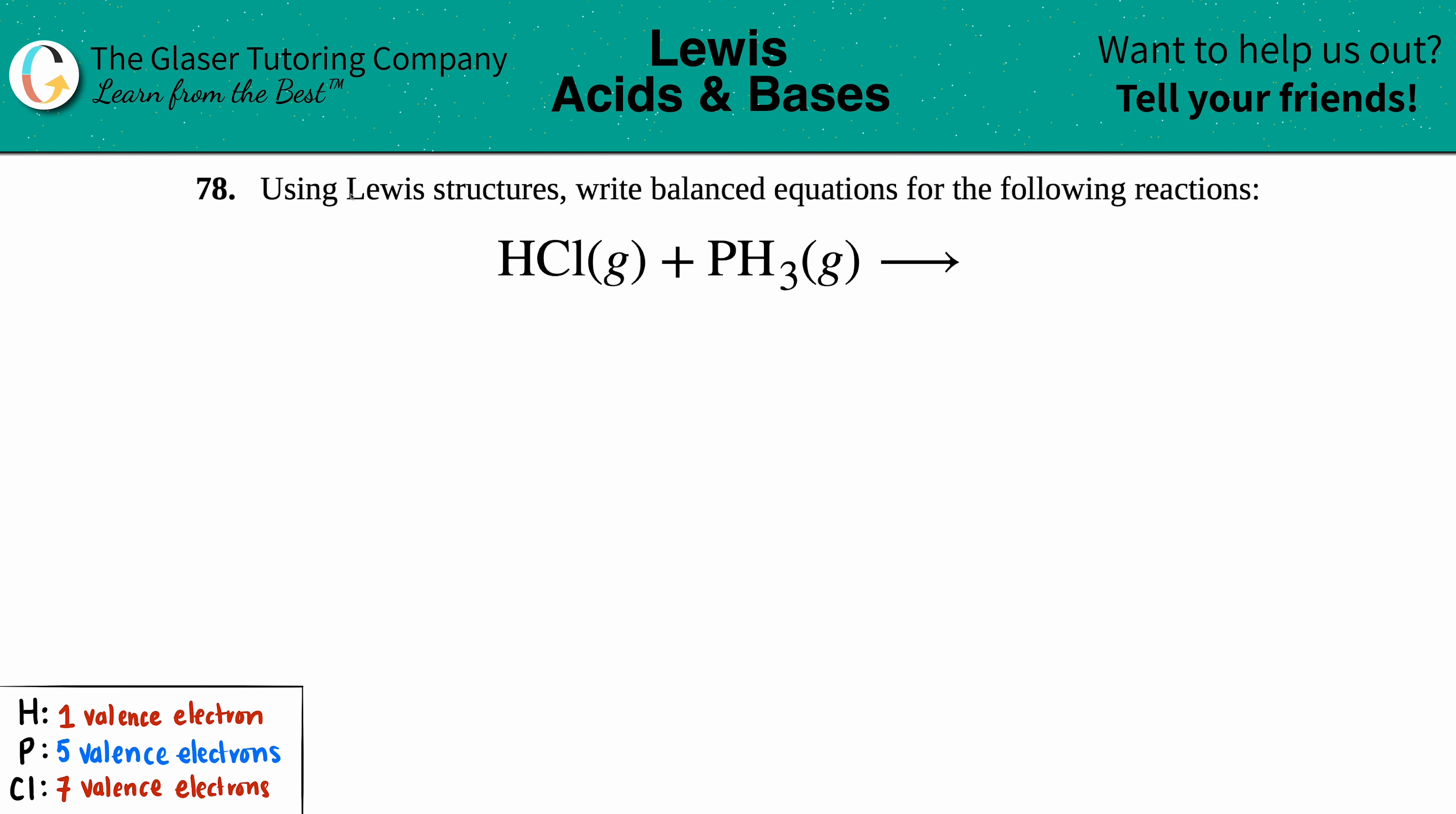Number 78: Using Lewis structures, write balanced equations for the following reactions. We have HCl gas plus PH3 gas, and we have to write a balanced equation. What are the products?